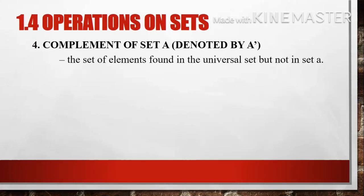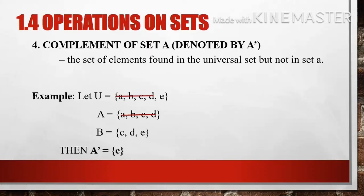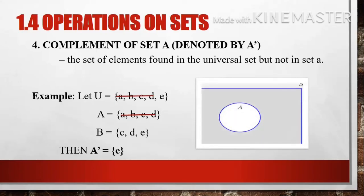Lastly, we have the complement of set A, denoted by A′. It is the set of elements found in the universal set but not in set A. Example: let U = {A, B, C, D, E}, set A = {A, B, C, D}, and set B = {C, D, E}. To find the complement of A, we disregard the elements in A and its common elements with the universal set, leaving only element E. So the complement of set A = {E}, as shown in the Venn diagram.